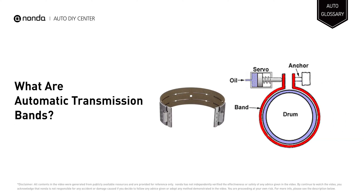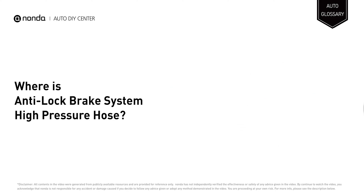Automatic transmission bands are steel bands that wrap around sections of the gear train and connect to the housing. As the band tightens around the drum, transmission fluid is squeezed out into grooves cut into the band surface. The band then brings the drum to a stop and holds it there.